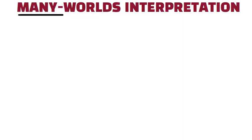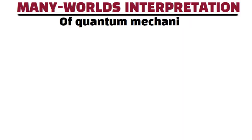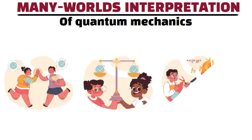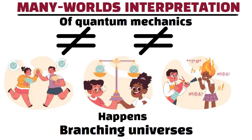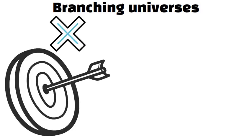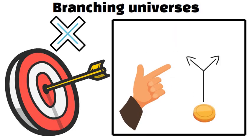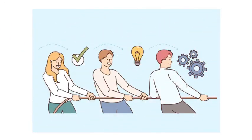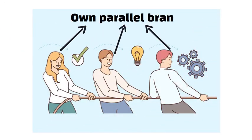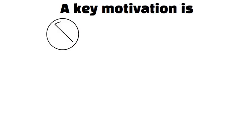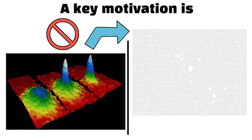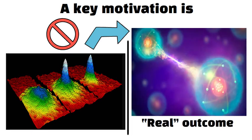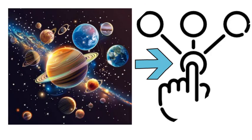Many Worlds Interpretation. The Many Worlds Interpretation of quantum mechanics says that every possible outcome of any event actually happens, but in different branching universes. Rather than the universe picking a single outcome, like a coin flip turning up heads or tails, Many Worlds proposes that all results occur simultaneously, each in its own parallel branch. A key motivation is to avoid the idea of wave function collapse, which suggests that quantum possibilities vanish into one real outcome. Many Worlds instead keeps every option alive.